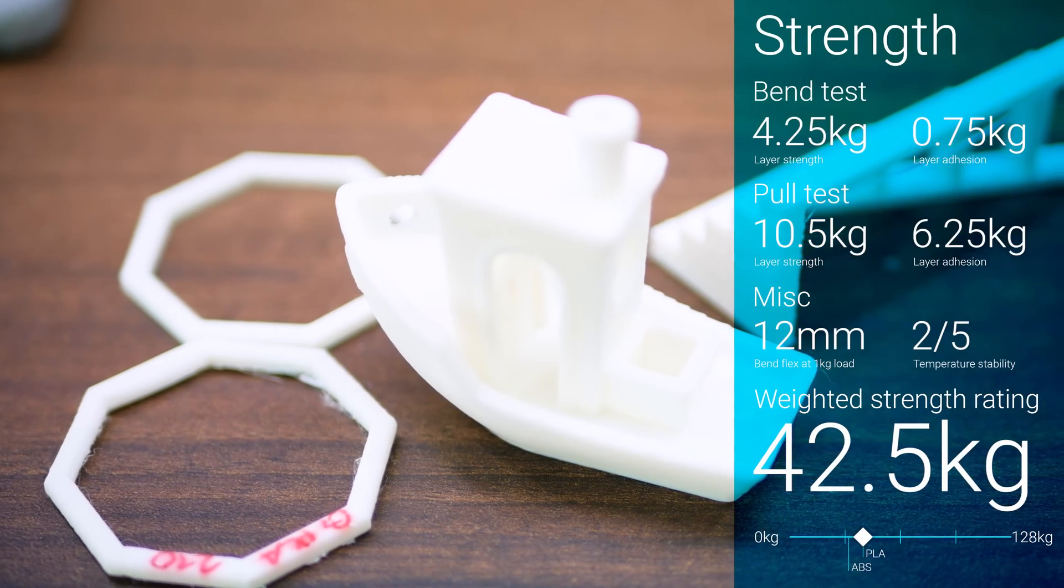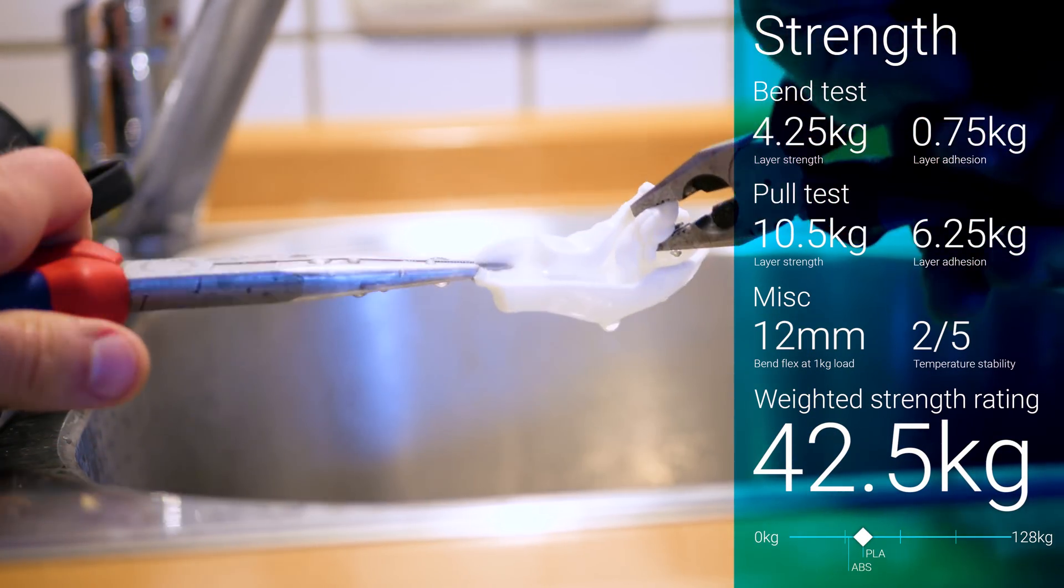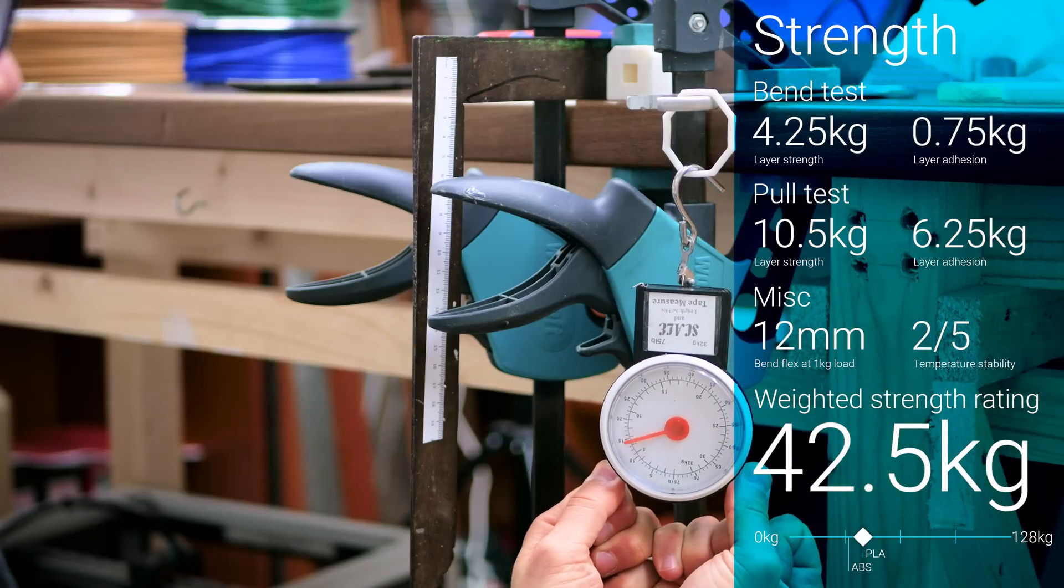Typical for PLA, the temperature stability is poor, but it performed well in the strength tests, only lagging behind when it comes to layer bonding. It gets a weighted strength rating of 42.5 kilograms.